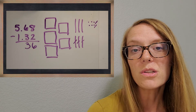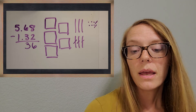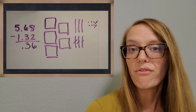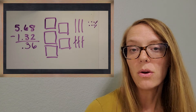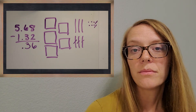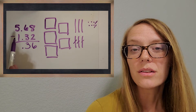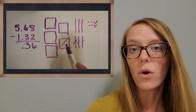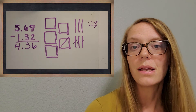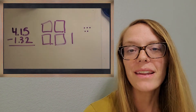Then we want to drop down the decimal point. And let's do the 5 whole — those flats are my wholes. 5 minus 1. You got it — 4. So our answer is 4 and 36 hundredths. Great job!